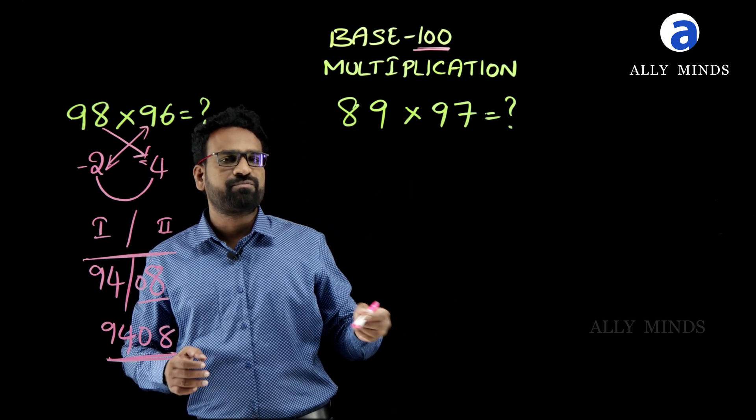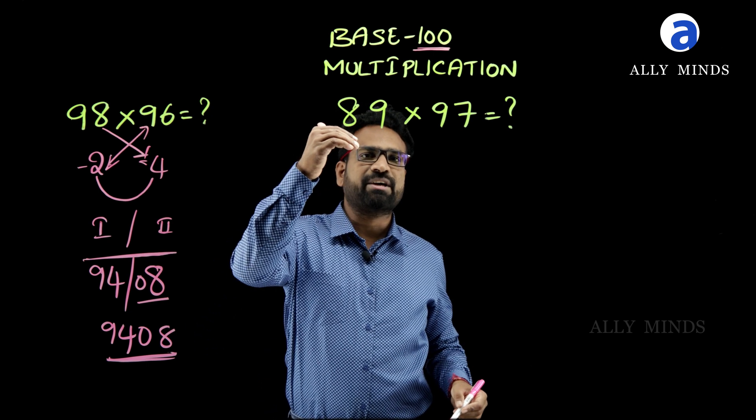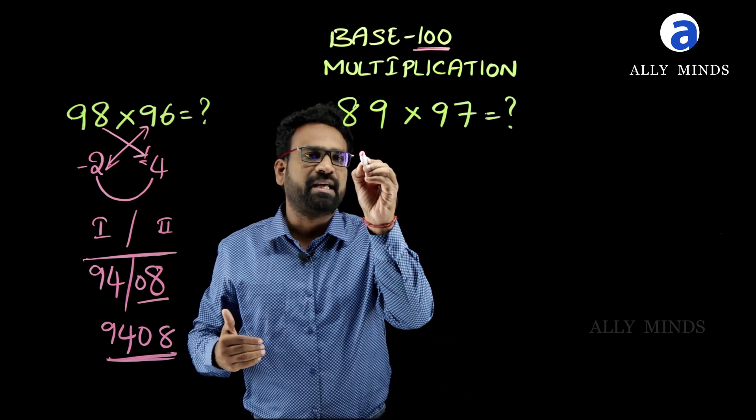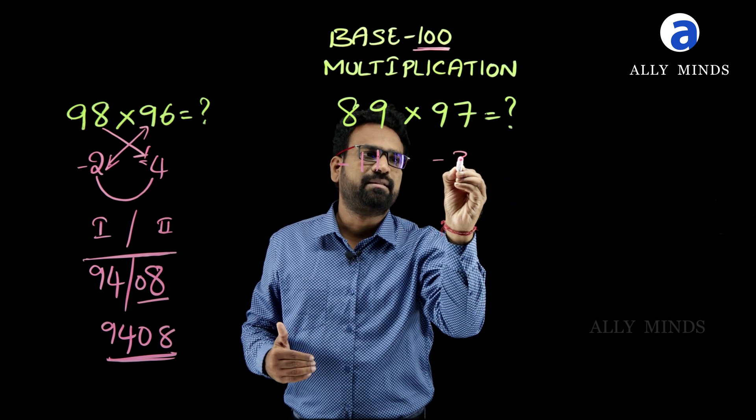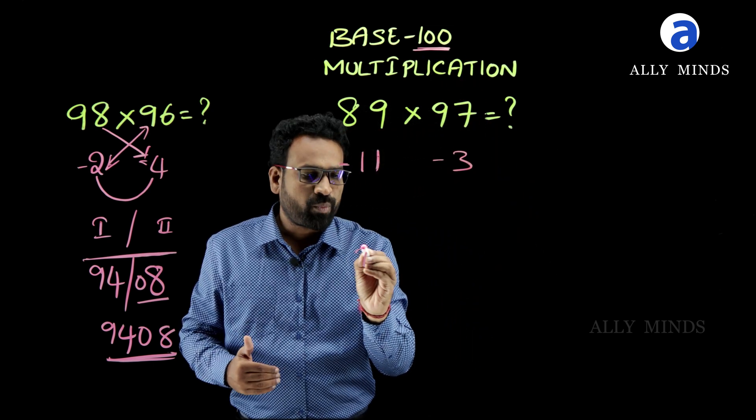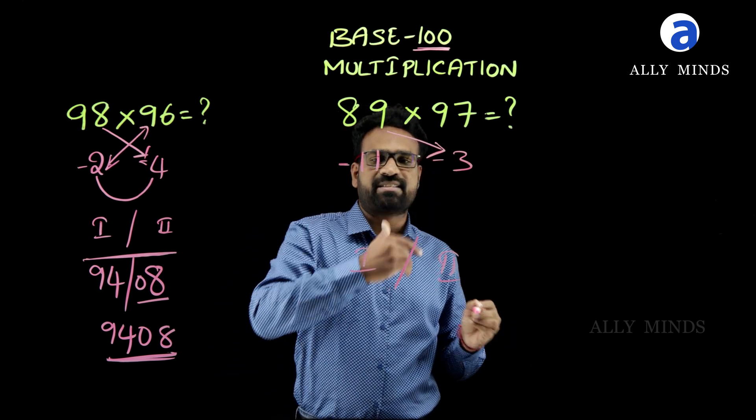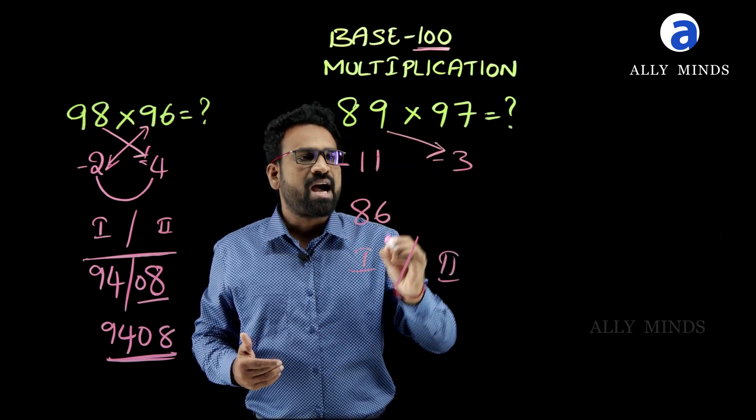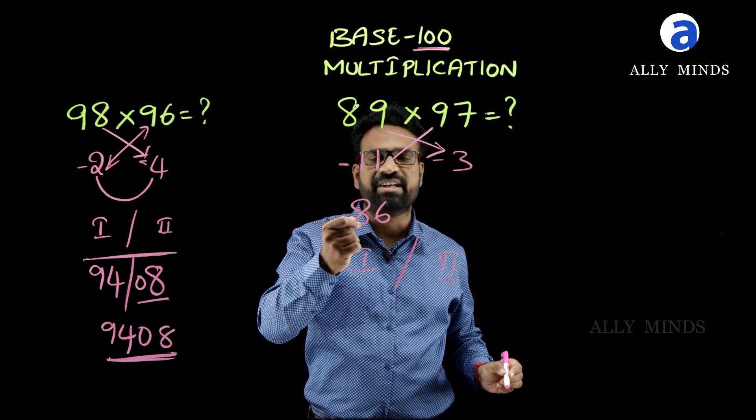Let us solve this problem. First of all, think of the difference between the given numbers and the base. Here the difference between given number 89 and base is 11, and the difference between 97 and base 100 is 3. Now, for the first part of the answer, we have to apply cross subtraction. 89 minus 3 is 86, and cross subtraction of 97 minus 11 also will give the same result of 86 only.